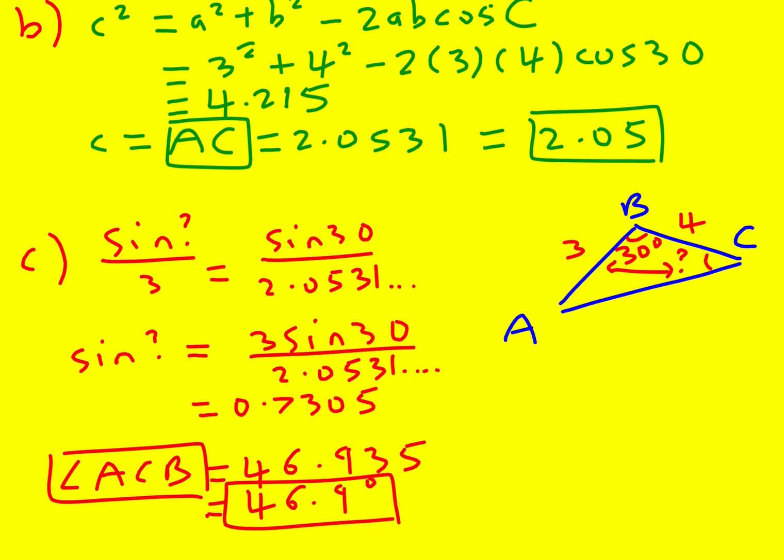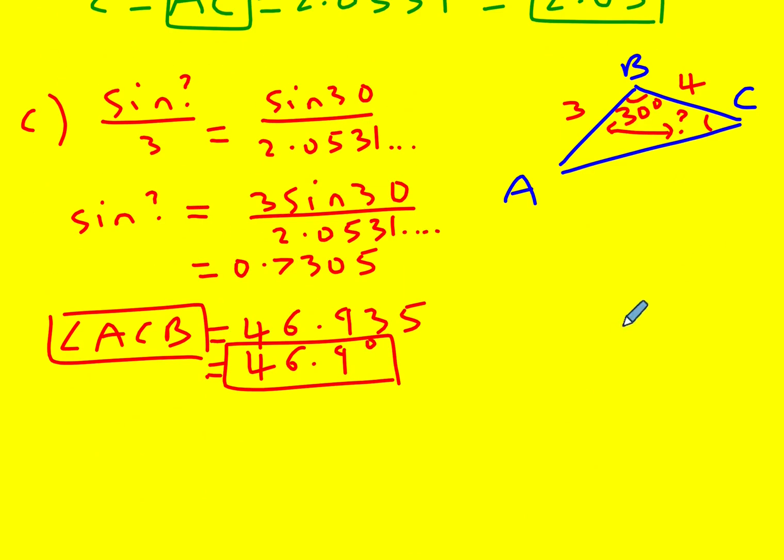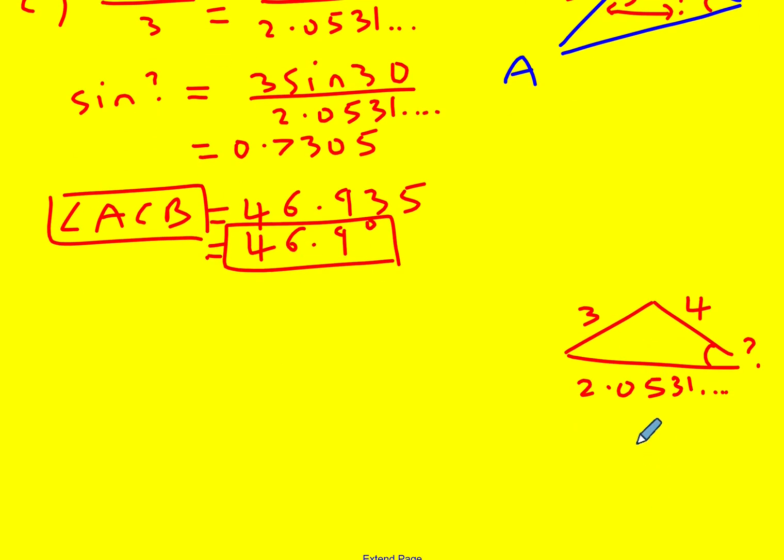Okay, let me just go over how we could use the cosine rule instead. So for that, I'm going to draw this triangle out again. I want to find this angle here. I've got 3, 4, and then 2.0531. This is just a sketch. It's not accurate in terms of what it looks like. So I'm going to now call this one C, this one A, and this one B.